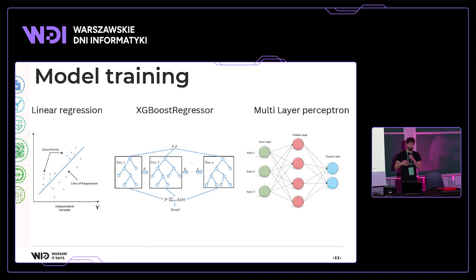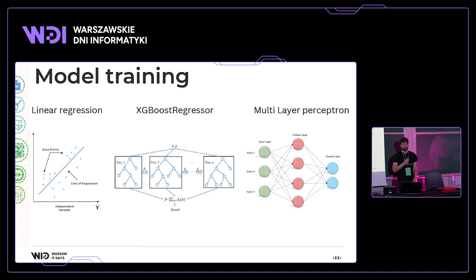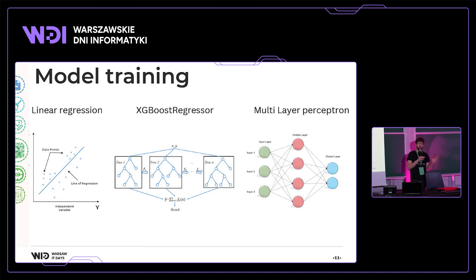We went through the whole process of building our dataset — now it's time to pick a model and do some machine learning. I decided to evaluate three different models: linear regression, XGBoost regressor, and multilayer perceptron. This is a regression problem, since soil moisture is usually between 0 and 0.6.